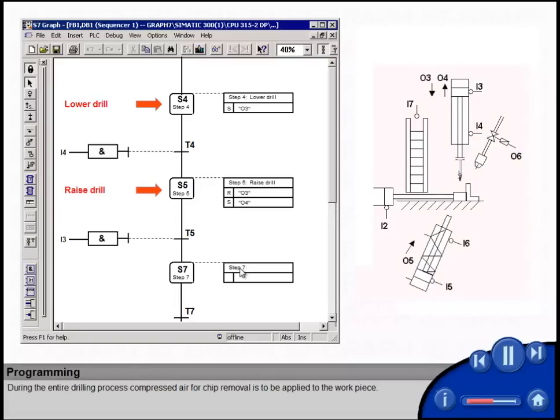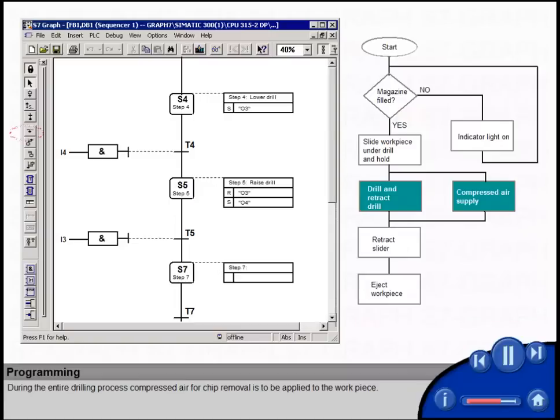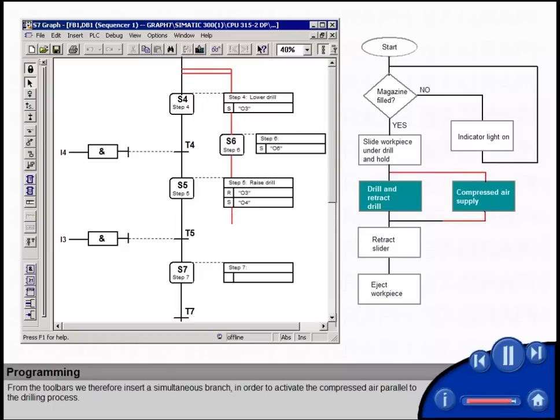During the entire drilling process, compressed air for chip removal is to be applied to the workpiece. From the toolbars, we therefore insert a simultaneous branch, in order to activate the compressed air parallel to the drilling process.